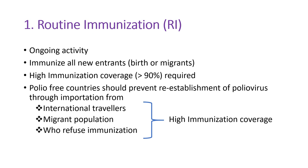The first strategy for polio eradication is routine immunization. This is an ongoing activity where all new entrants into the population, whether by birth or migration, are immunized on a continuous basis to prevent the formation of pockets of susceptibles. Immunization coverage is required to be maintained at a high level — more than 90%. Polio-free countries must continue to ensure high levels of immunization coverage to prevent re-establishment of polio virus through importation from other countries via international travelers or migrant populations.